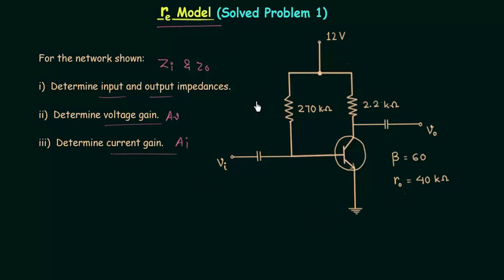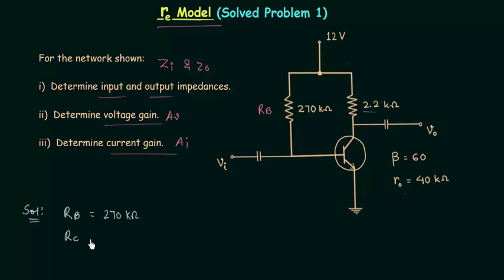You can see a BJT amplifier circuit on your screen and a few parameters are already given in the problem. Resistance RB is equal to 270 kilo ohms, resistance RC is equal to 2.2 kilo ohms, beta is equal to 60 (the amplification factor), and resistance RO is equal to 40 kilo ohms.